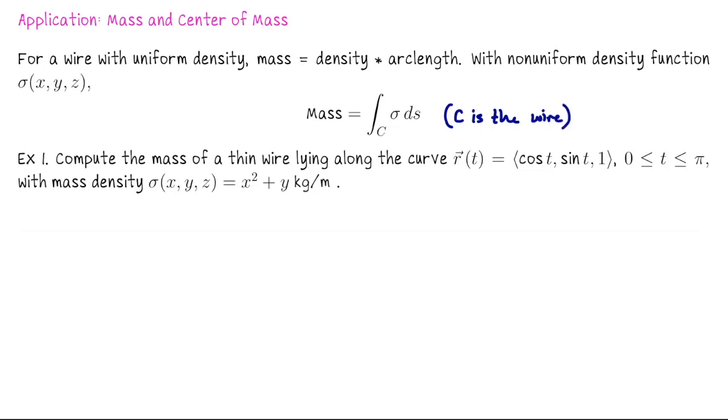Let's compute the mass of a thin wire lying along the curve r of t equals cosine t sine t 1 for t values going from 0 to pi with mass density function sigma of x, y, and z is x squared plus y kilograms per meter. This is a scalar line integral so we're just going to set up the same four steps as before. The first one is to identify our parametrization which we already have. R of t equals cosine t sine t 1 for t values going from 0 to pi.